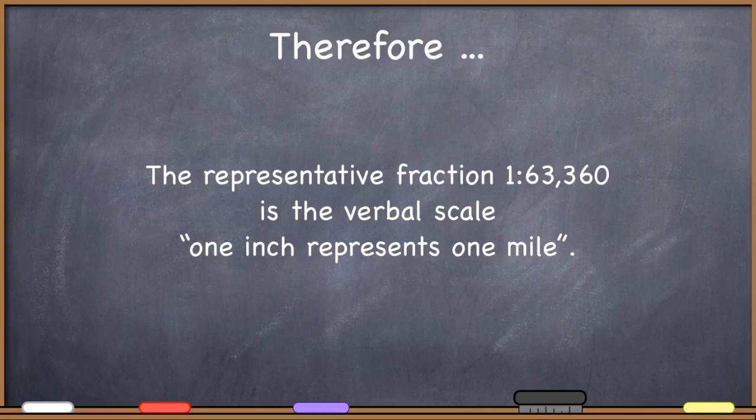Therefore, the representative fraction one to 63360 is the verbal scale one inch represents one mile. There are 63360 inches in a mile and it's perfectly valid in a statement scale, a verbal scale, as long as you do your unit conversions correctly to say one inch represents one mile. And you can definitely see how it is much better and much more effective to communicate the scale in a verbal fashion by telling someone that one inch represents one mile and not one inch represents 63360 inches. Nobody knows how far 63360 inches happens to be. We do have a cognitive understanding of how far one mile is. Therefore, conversion to a useful unit when expressing a verbal scale is essential.